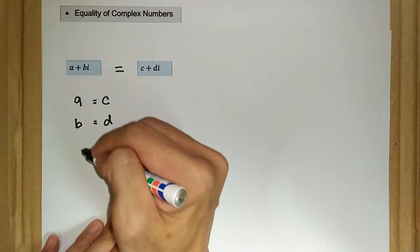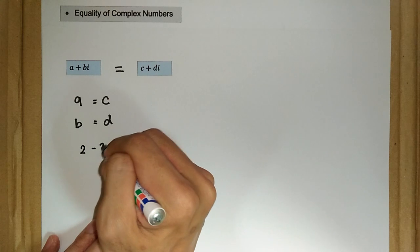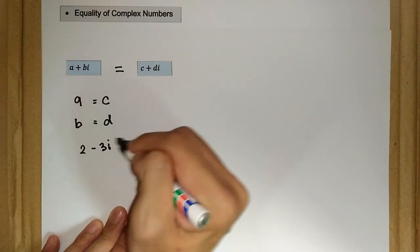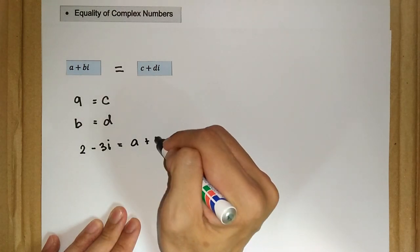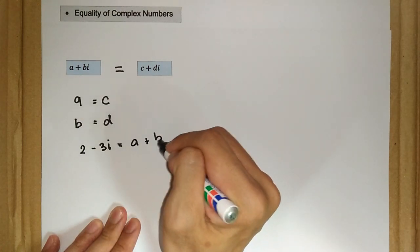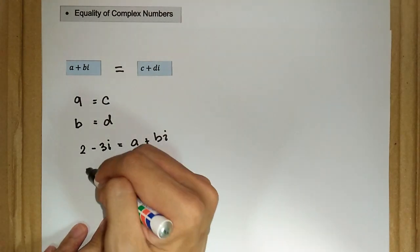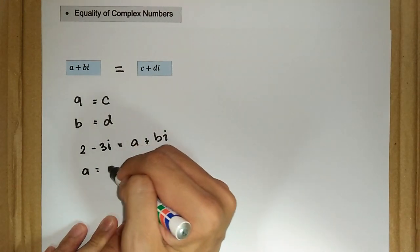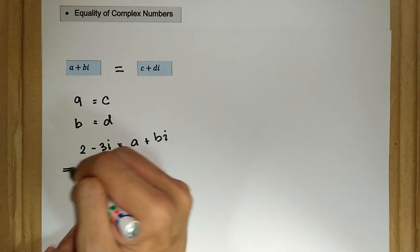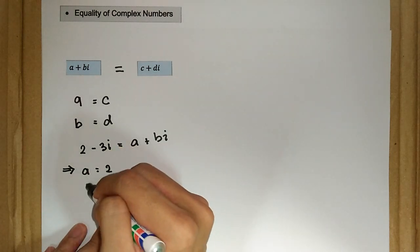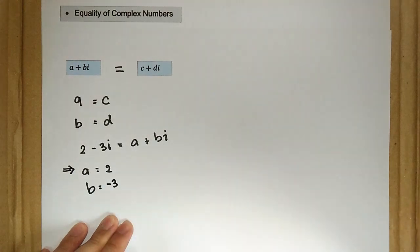For instance, let's say we have 2 minus 3i is equal to a plus bi. So we can say that a is equal to 2 and b is equal to negative 3.